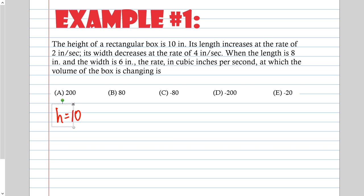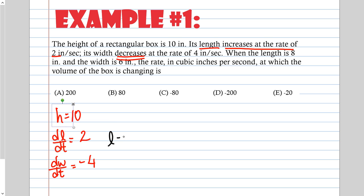The length, L, is going to be increasing at a rate of 2 inches, so dL/dt = 2. Its width decreases — the word 'decreases' does have an effect on the number — so dW/dt is negative 4. When L is 8 inches and the width is 6 inches, we want the volume's rate.